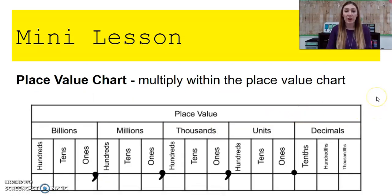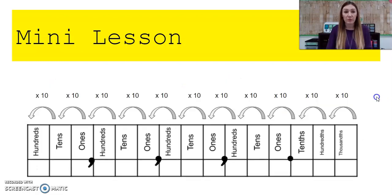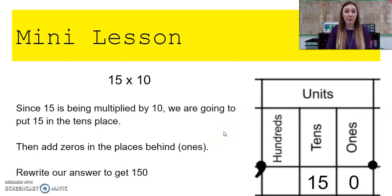We're also going to look at place value chart multiplication, which is just multiplying within our place value chart. So quickly, I want us to remember that as we move to the left in our place value chart, our numbers get larger. So let's start with an example, 15 times 10.